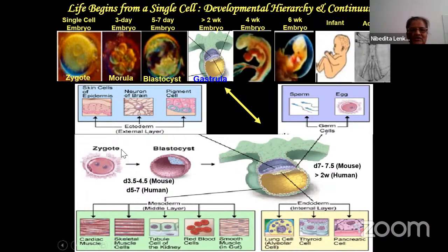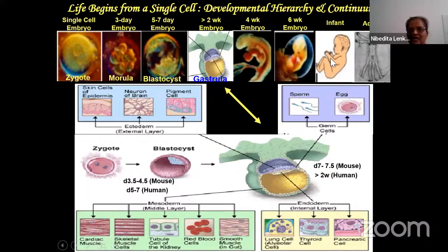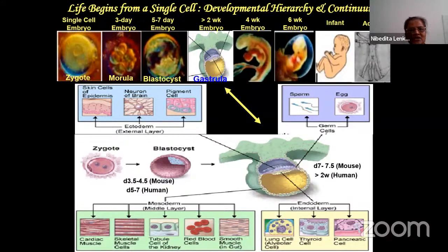During gastrulation you get three germ layers: ectoderm, mesoderm, and endoderm. These give rise to all other different cell types in our body, which further form tissues, organs, and then the entire organism. After gastrulation, germ cell development also takes place - around this time the gonads are formed, then comes the fetal stage, then we arrive at the adult. This entire body plan is put forth in a very well-organized fashion. Any defect or anomaly leads to developmental defects or disease progression.